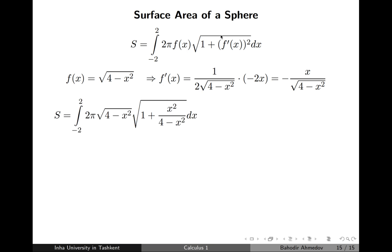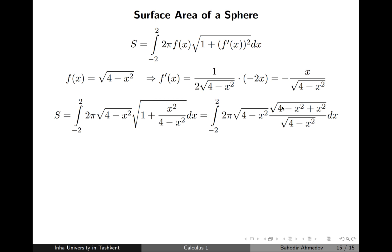Substituting into the formula, inside the square root we get a common denominator: (4 − x² + x²)/(4 − x²), which simplifies to √4 = 2. This term cancels with the denominator from f(x), and we are left with integrating 4π dx from −2 to 2. After integration, we get 16π, which corresponds to the formula 4πr² with r = 2, confirming the result is correct.